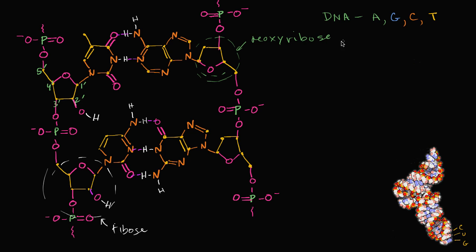In RNA, you still have adenine, you still have guanine, you still have cytosine, but instead of thymine, you have a very close relative of thymine, and that is uracil.